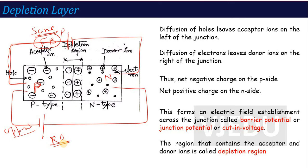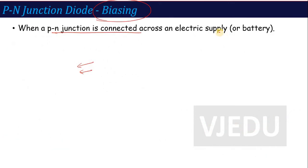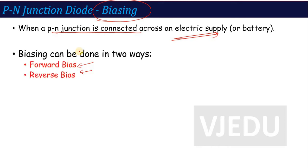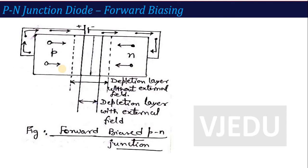So, when the p-n junction diode is connected across an electric supply, this is called biasing. Biasing is divided into two categories: forward bias means same polarity — p connected with positive, n connected with negative. Now, what happens when forward biasing is applied onto your p-n junction diode?